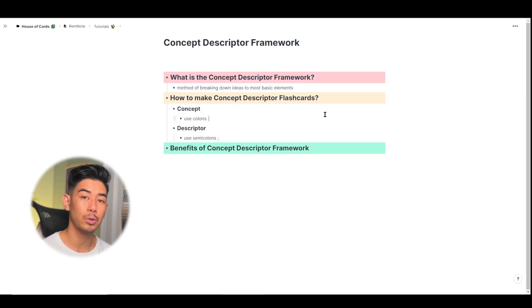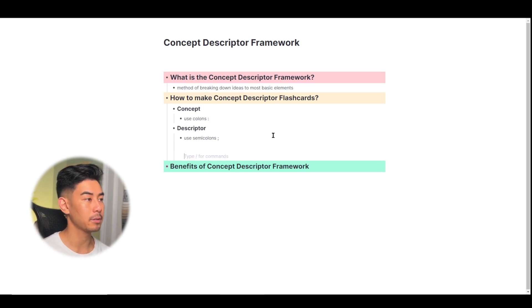To make concept flashcards, we use colon and the angle brackets, and to make descriptor flashcards, we use semicolons and angle brackets. And I'm just going to continue off using the example from the thought experiment. So hamburger is our concept. To make hamburger a concept flashcard, let's use a colon, followed by a greater than angle bracket.